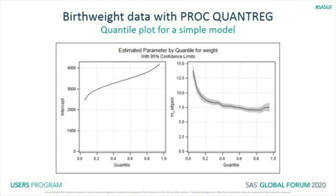When we do this, we get two plots — the parameter estimates at all quantiles from 0.05 to 0.95. On the left is the intercept: it goes up as quantiles go up — bigger babies, higher intercept, no surprise. On the right is the parameter estimate for maternal weight gain. It's higher at the low end, meaning that while women who gain more weight can have heavier babies at every quantile, the tendency is stronger at the lowest quantiles — almost twice as much. At the extreme left it's almost 15; on the right it's about 7.5. That's a big difference.